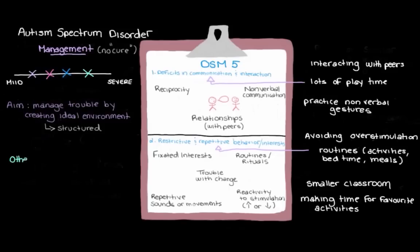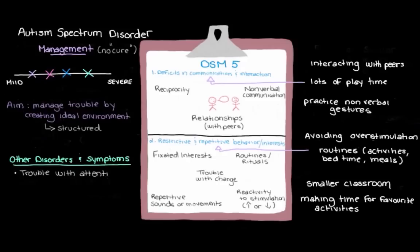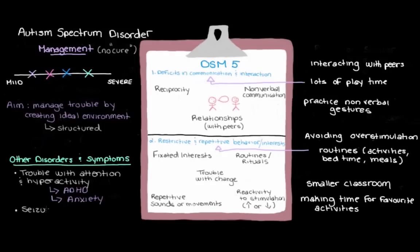Sometimes managing autism spectrum disorder involves additional measures to address other disorders and problems that can occur alongside it. Kids with ASD may have trouble with attention and hyperactivity, either because they also have ADHD or because they're struggling with anxiety, which is a common problem for kids with ASD. Kids with ASD are also at higher risk for other conditions like seizures, sleep trouble, and depression. So sometimes medications that help target and manage these other symptoms and conditions can become part of a management plan for autism spectrum disorder.